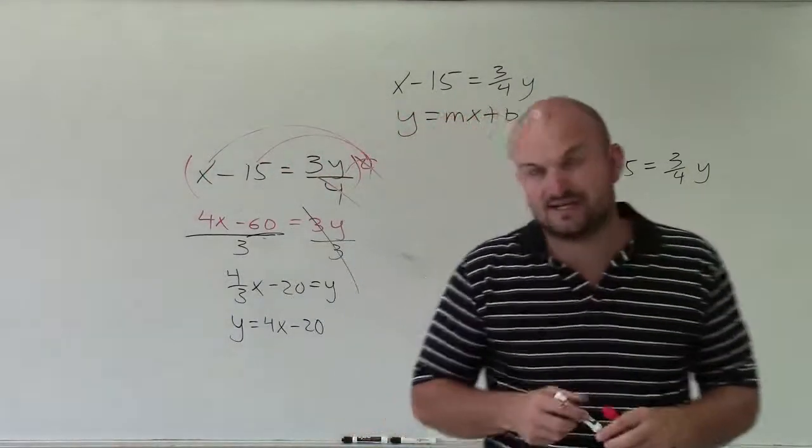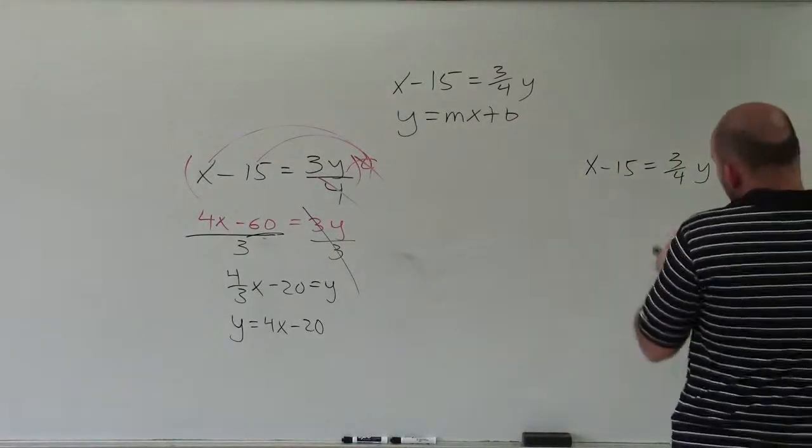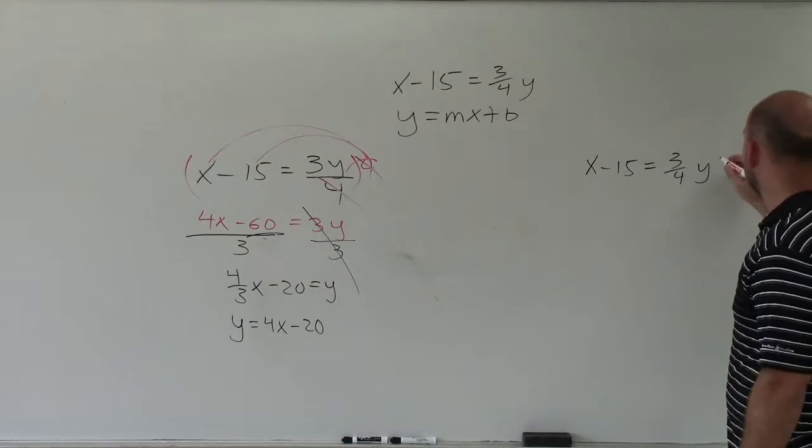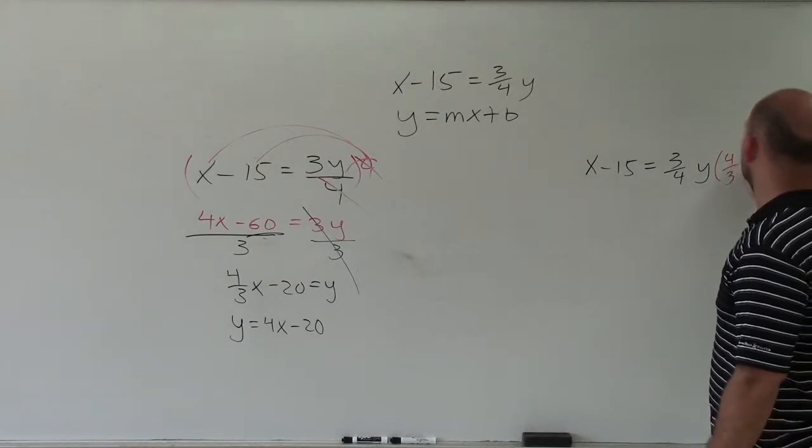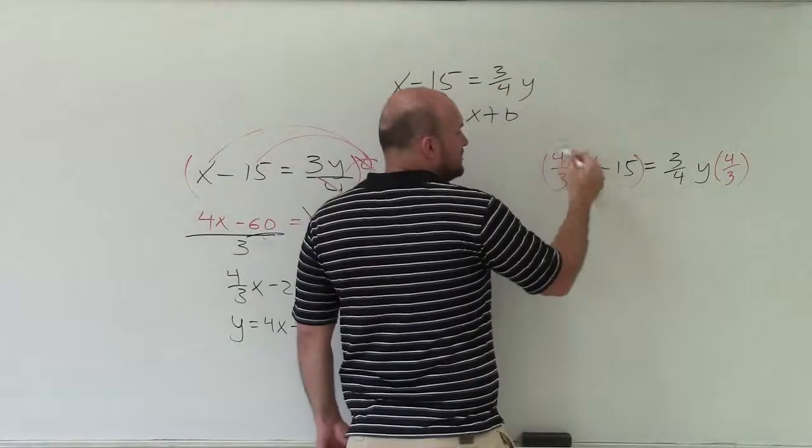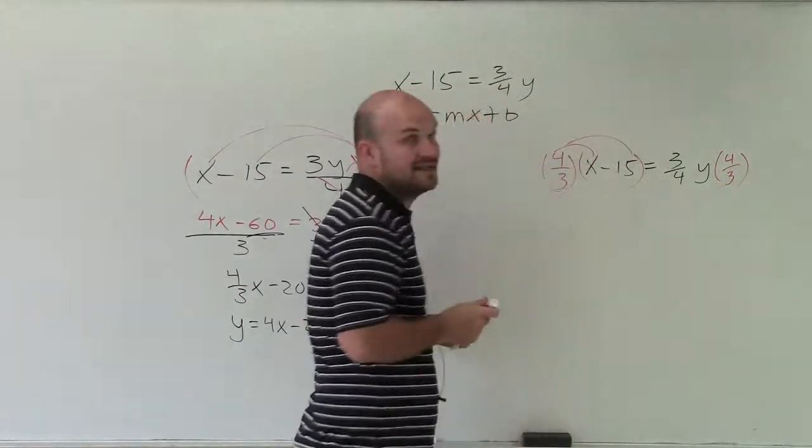Now let's kind of look at this the other way to kind of see if this works. The other way to get rid of fractions is multiply by the reciprocal. So to do that, I'll just multiply both sides by the reciprocal. Again, when I multiply this side, I have to multiply both terms by this reciprocal.